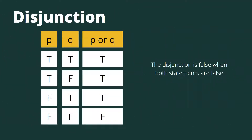Another statement we have is what we call the disjunction. The disjunction is false when both statements are false. We have two statements, p and q. If the case is p or q: true and true, that would be true. True or false, that would be true. False or true, that would be true. And both false — false or false — then it would be false.